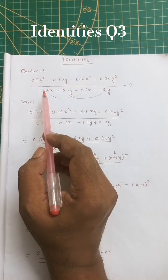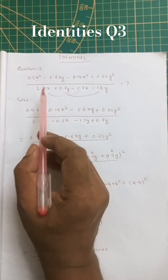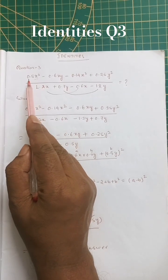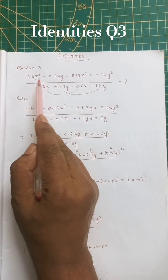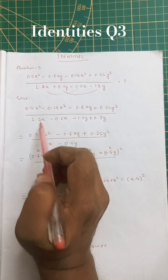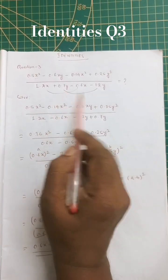Today we'll solve one more problem from identities. In step one, I arranged x squared at one place, then x x at one place, and y y at one place.